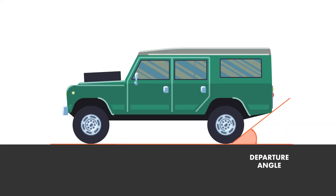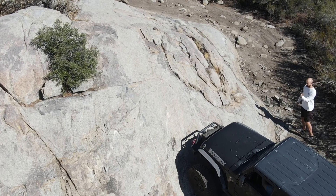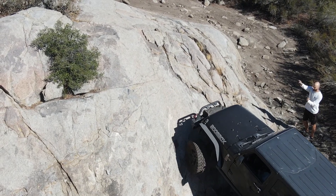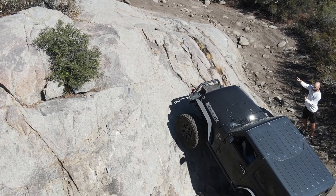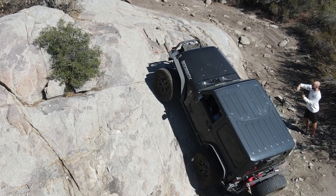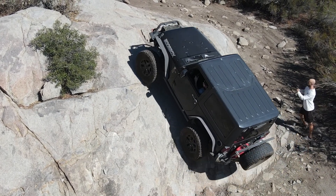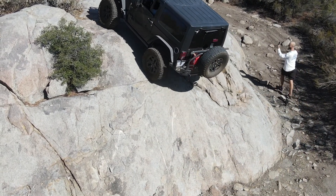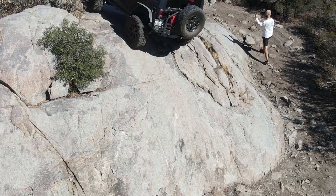Next, we're going to talk about departure angle, which is the rear end counterpart of approach angle. The departure angle of your vehicle will determine how steep of an angle your car will be able to climb so that your rear bumper doesn't hit the ground as your back tires climb onto the slope.